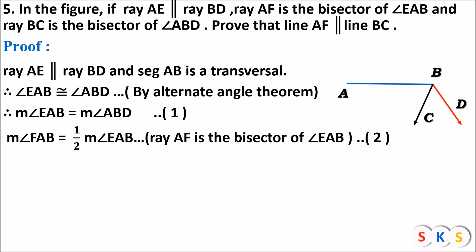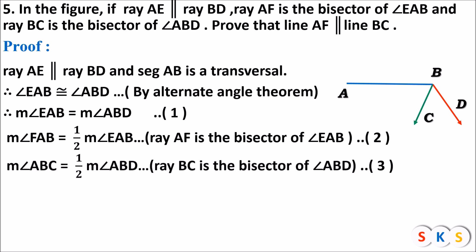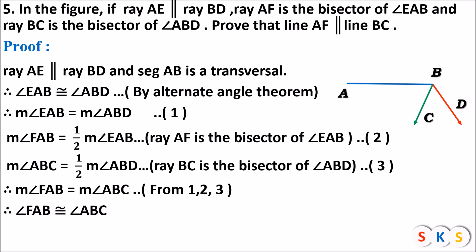Ray BC is the bisector of angle ABD, so it divides angle ABD into two equal angles: angle ABC and angle CBD. Therefore measure of angle ABC equals half of angle ABD — equation number three. From equations one, two, and three, the right-hand sides of equations two and three are both half of equal angles, so measure of angle FAB equals measure of angle ABC. Therefore angle FAB is congruent to angle ABC.